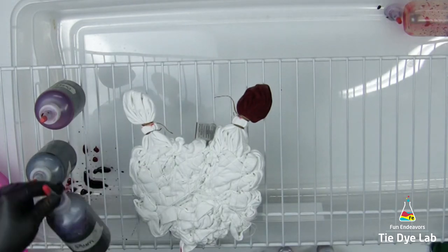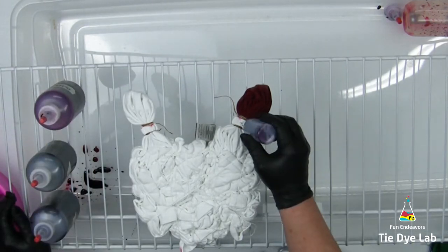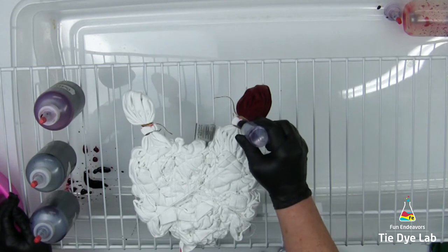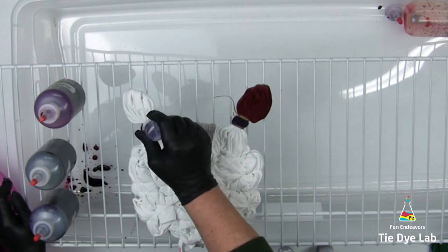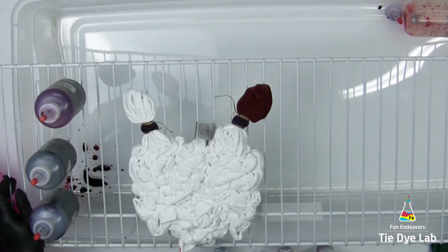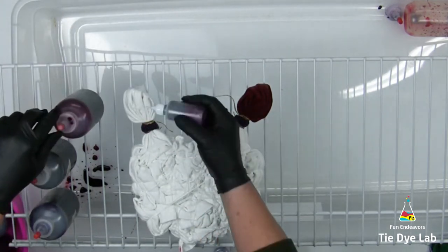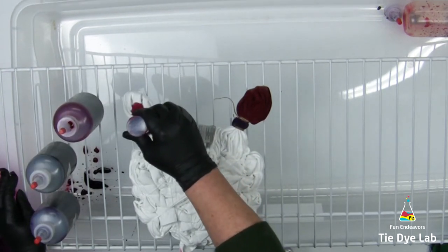In the extra space right outside of the heart, I'm going to use Plum from Dharma Trading Company. The other heart, I'm using Bubble Gum from Pro Chemical and Dye.